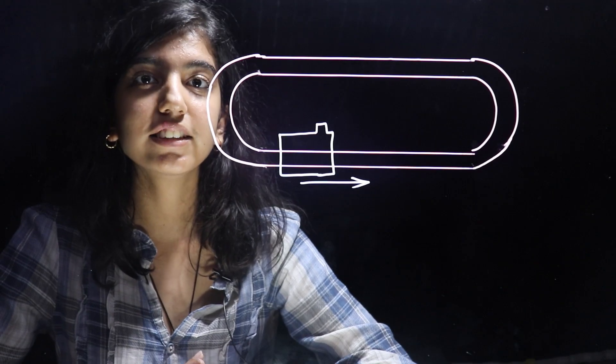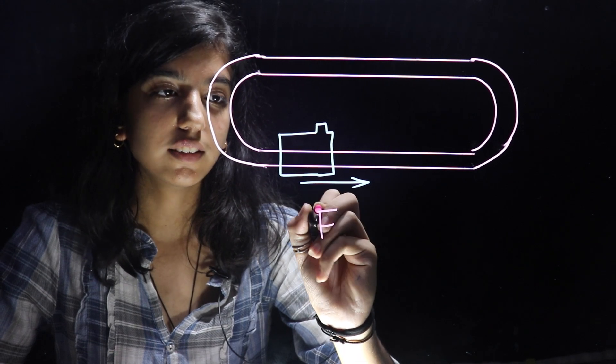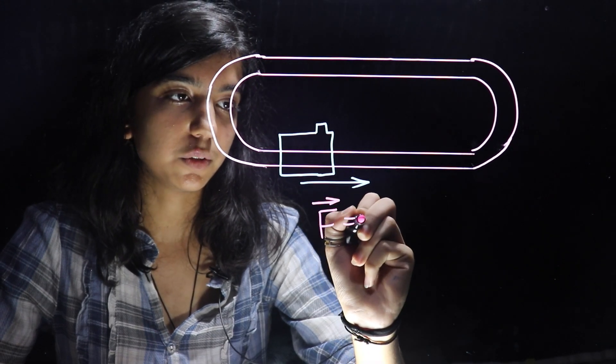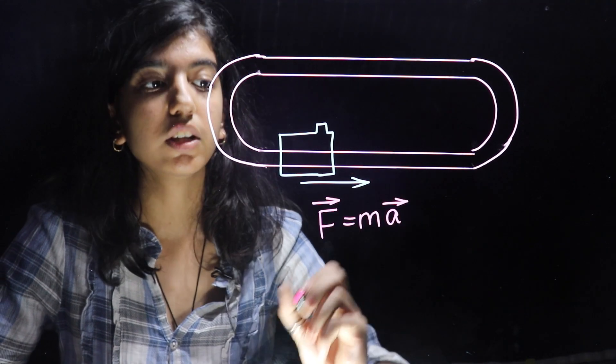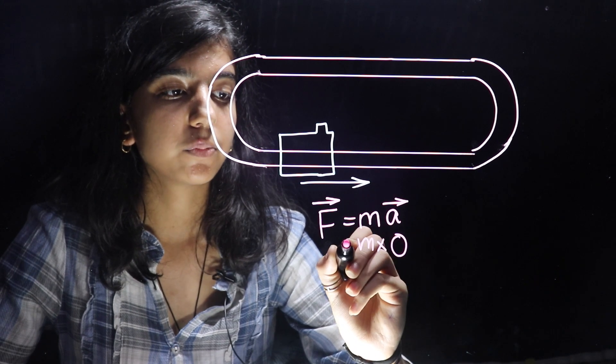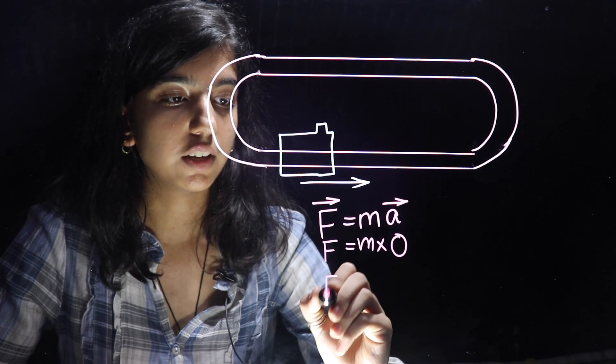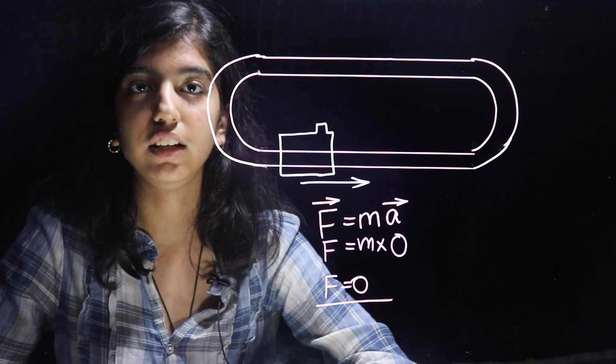Now we know acceleration is zero on the linear path. So from Newton's second law, that is, F is equal to m into a, that is mass into acceleration, and acceleration is zero. So m into zero. So F is zero. So the force is zero on the linear path.